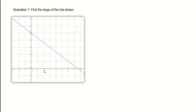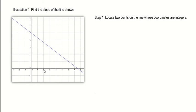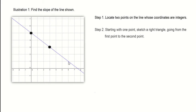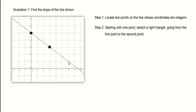How do we determine the slope of this line? We have some steps to follow. Step one: locate two points on the line whose coordinates are integers. We have these two points here, but we can also make use of other points whose coordinates are also integers.